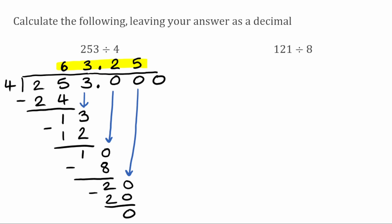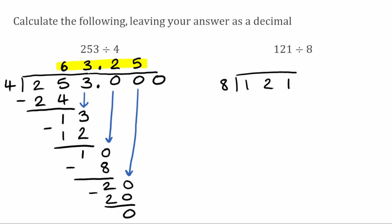We're going to use the exact same method for the next question: 121 divided by 8. First, how many times does 8 fit into 1? It doesn't, so we move to the next digit. We've now got 12. How many times does 8 fit into 12? That'll go once because 8 times 1 is 8. 12 take away 8 leaves 4. We bring down the next digit, which is 1, giving us 41. How many times does 8 fit into 41?